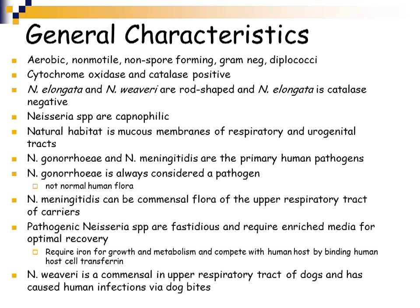They are oxidase and catalase positive. There are some differences in morphology and biochemical tests among some organisms in this group. The non-pathogenic Neisseria elongata and Neisseria weaveri are rod-shaped, and Neisseria elongata is catalase negative. The Neisseria species are capnophilic — they are aerobic but grow better in a CO2 incubator than in ambient air, especially the pathogenic organisms. The natural habitat of these organisms is the mucous membranes of the respiratory and urogenital tracts.